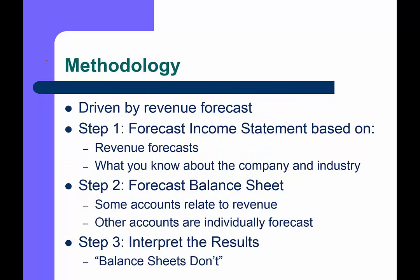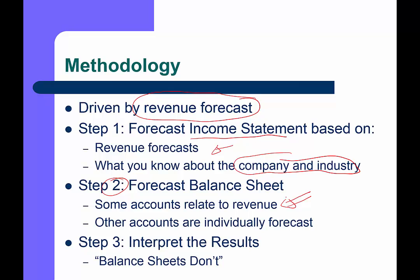Forecasts are based on qualitative decisions about quantitative variables. We're making judgment calls about numbers, not simply calculating them the same way every time. The most important driver is typically the revenue forecast — how are sales going to grow, what's the scale of the company? Based on that, we forecast the income statement, drawing on what you know about the company and the industry. When the income statement is forecast, we go to step two: forecast the balance sheet.